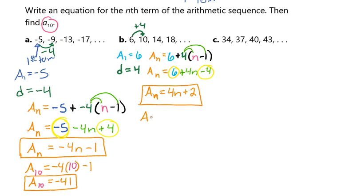And now we want to take the n out and put a 10 in its spot instead. So we want to know what is 4 times 10 plus 2. And so when we plug that into our calculator, 10 times 4 is 40, and 40 plus 2 is 42. And that gives us the 10th term of that sequence.